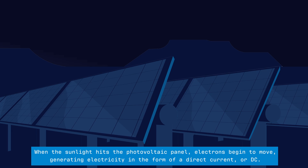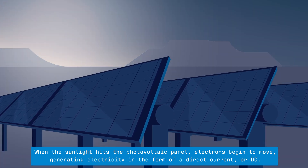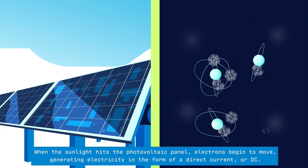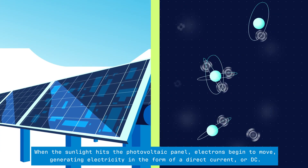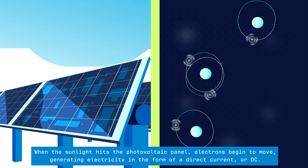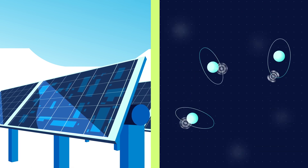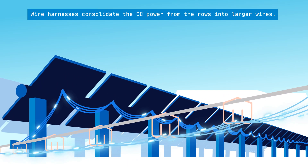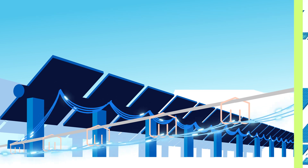When the sunlight hits the photovoltaic panel, electrons begin to move, generating electricity in the form of a direct current, or DC. Wire harnesses consolidate the DC power from the rows into larger wires.